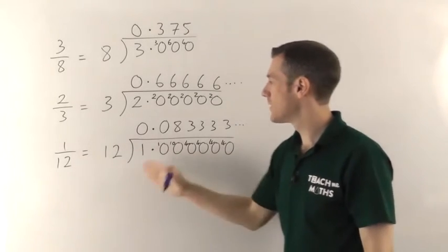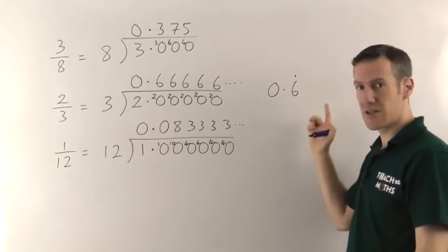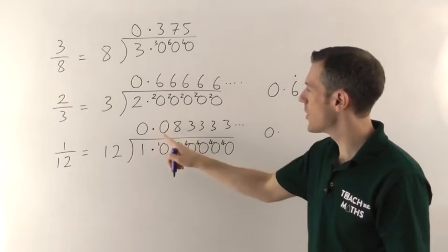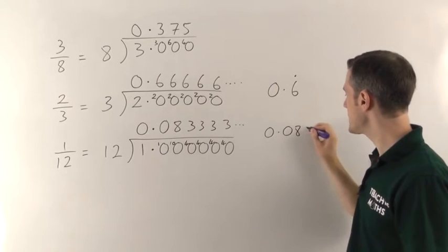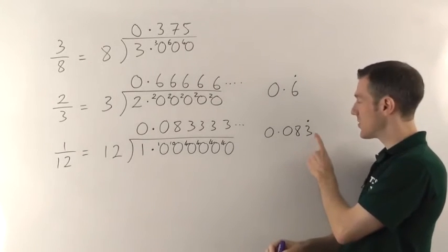So we can write 1/12 as a recurring decimal. This time it's slightly different from this. It's not just one digit that goes on like that because there's some other stuff first. So it's going to be 0.083 and it's the 3s that go on forever.